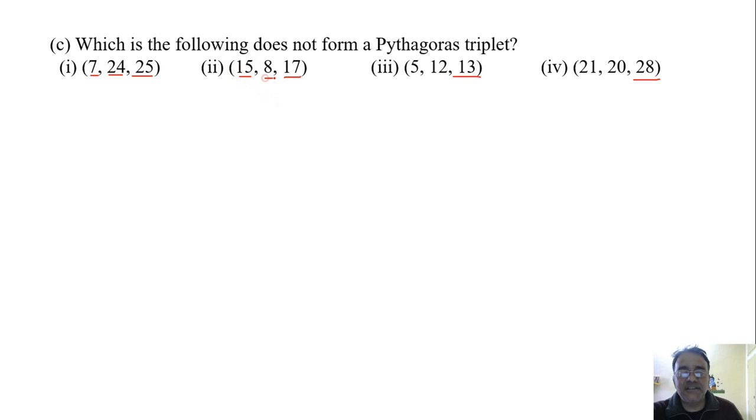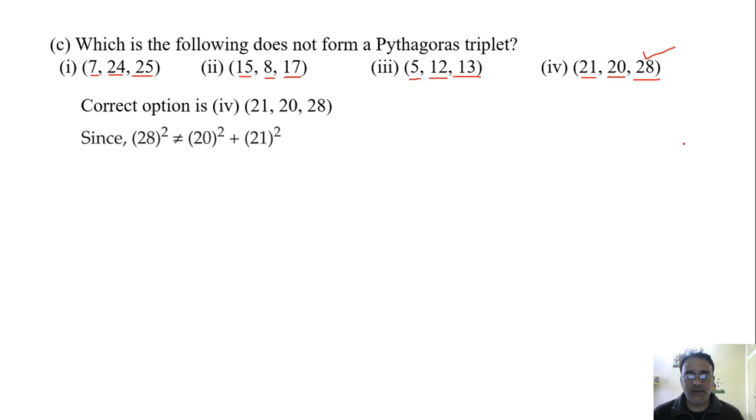225 plus 64 is equals to 289, so here also we are getting 17 square. 25 plus 144 is 169, so we are getting 13 square. Now 441 plus 400 is not getting 28 square. So which option is correct? Fourth option. Fourth option. Why? Because 28 square is not equals to 20 square plus 21 square. Okay.